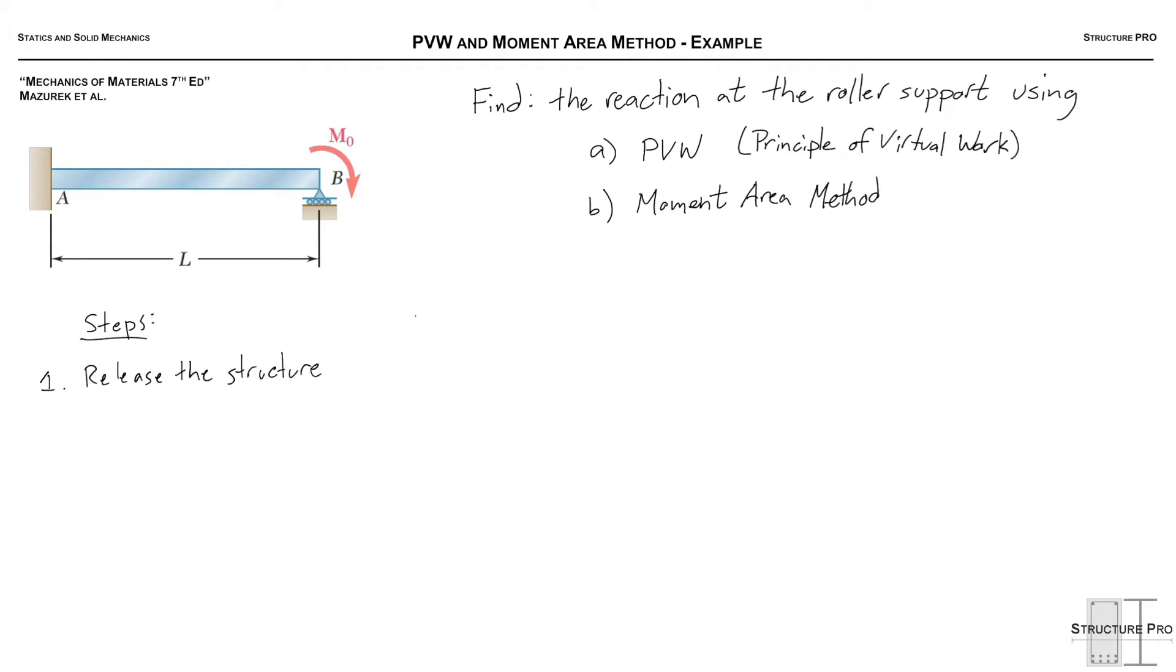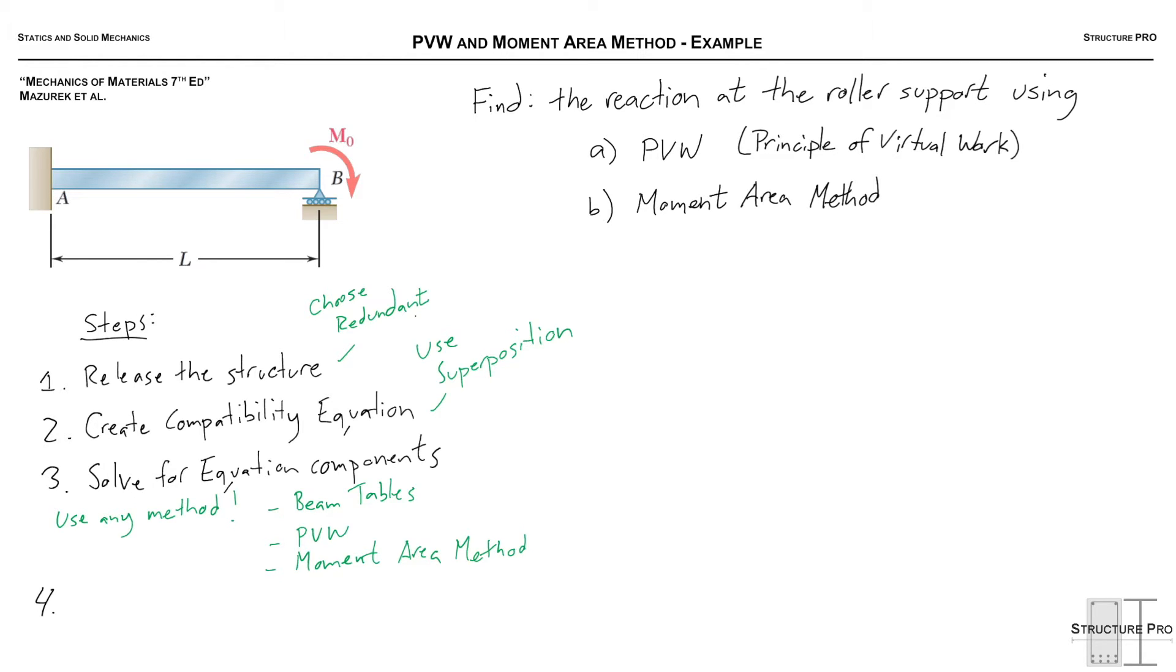Alright, so first things first. Let's lay out our steps. Number one, we have to release the structure. We can't solve this structure as it is, too many reactions. So let's release it, make it statically determinate, and then we'll create a compatibility equation which we'll solve for the redundant that we choose. The second step we're going to use superposition to make an equation and that equation is really it can be made because of compatibility. And then third we're going to solve for the equation components so that in step 4 we can ultimately solve the equation itself for the redundant value.